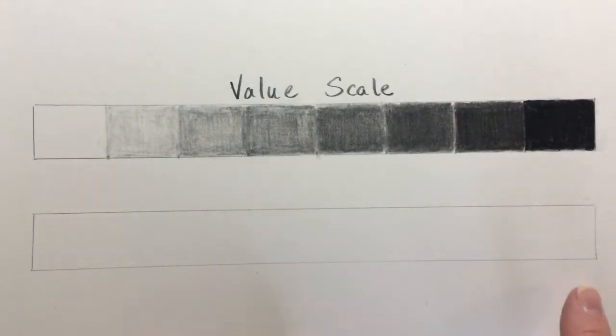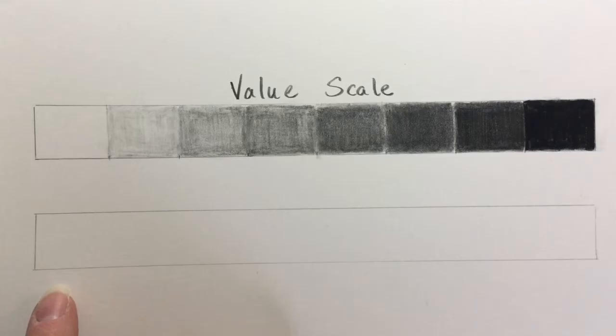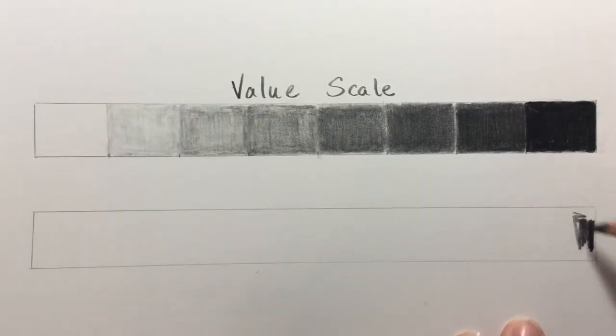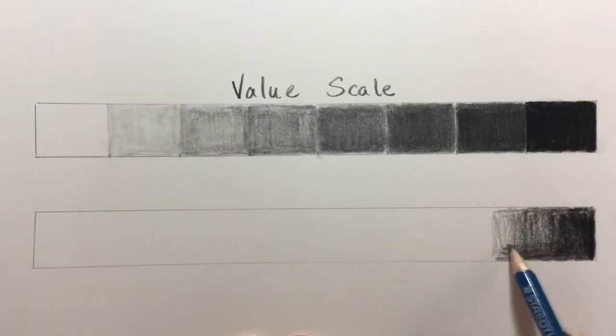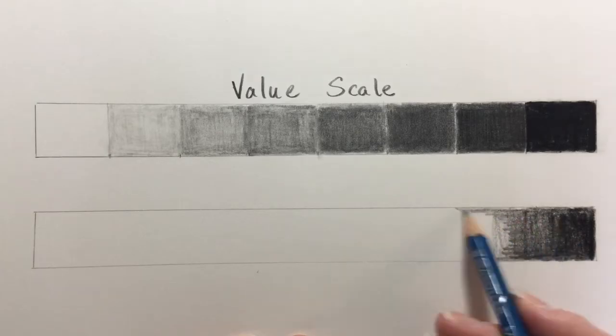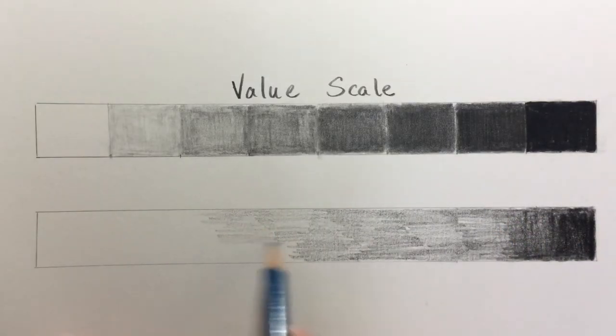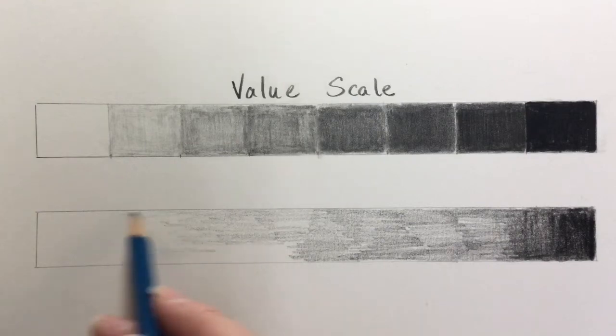Next I'm going to work on the gradation scale. I'm going to start with the darkest value and get gradually lighter. The purpose of the gradation scale is to practice getting gradually lighter and moving your pencil strokes very close together.